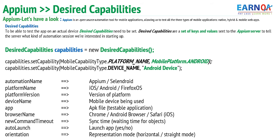Appium can create a session that would allow us to execute and interact with the mobile devices. Now that we understand desired capabilities, let me define them and then we'll see the different keys and values — the different desired capability elements that we need to specify.